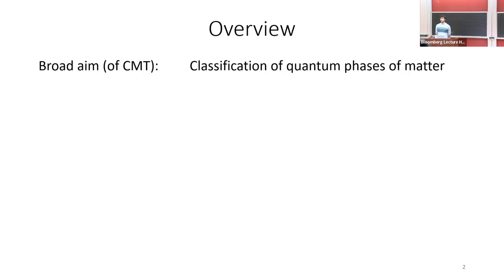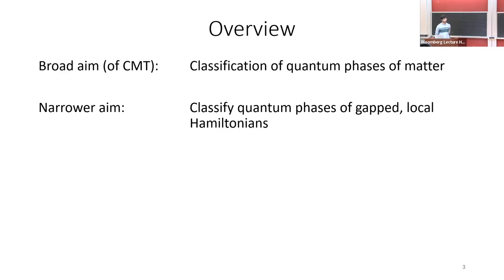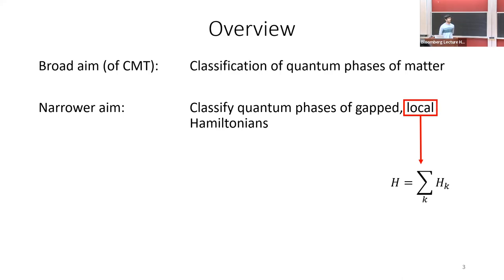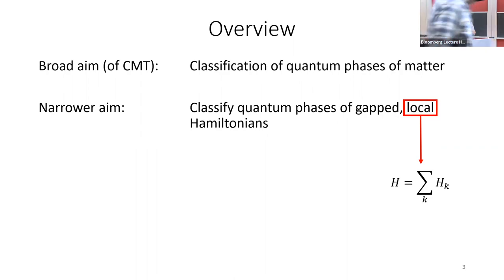I'm a condensed matter theorist, and one of the broad aims of condensed matter theory over the last 10-20 years has been the classification of different phases of matter. This is a problem so broad that in some sense it's meaningless, but we can make progress on a narrower angle: classifying all the quantum phases of gapped local Hamiltonians. By local, I mean I have some Hamiltonian which is a sum of local terms.